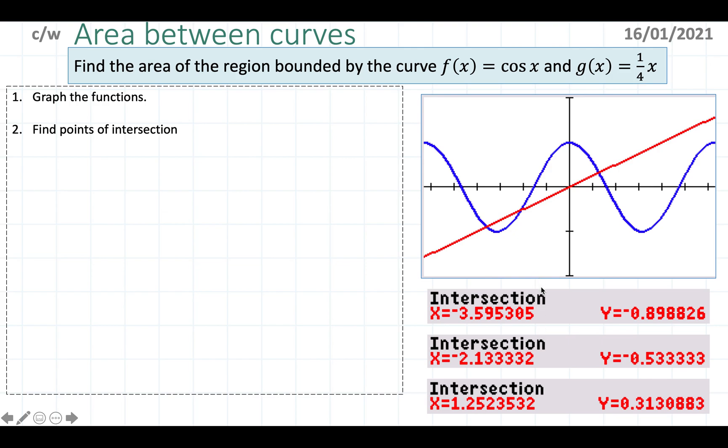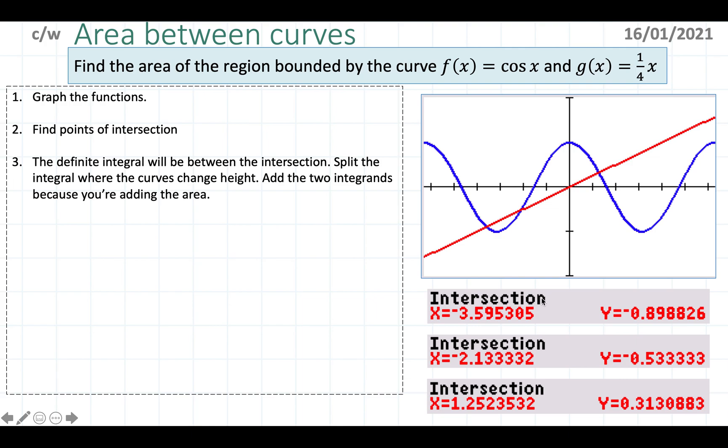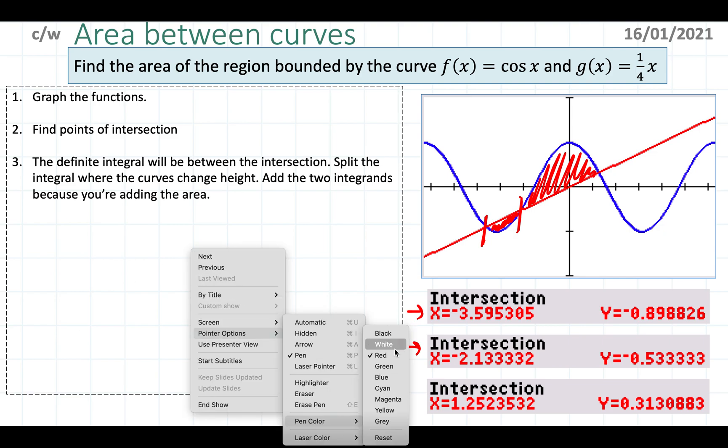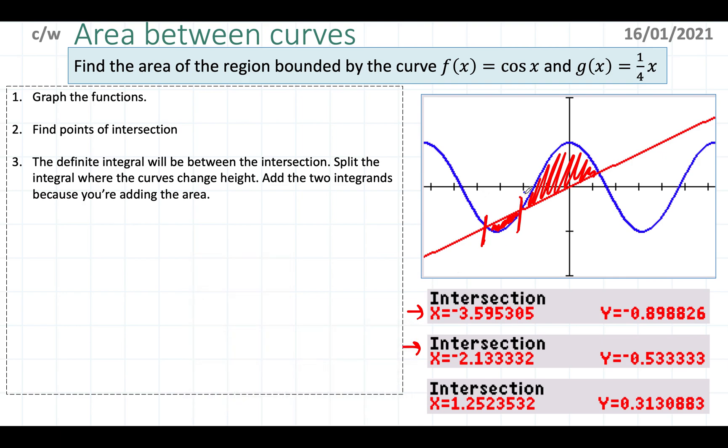Basically the area I need to find is between those intersections, so I need to split my integral to fit those intersections. The first area I need to find is this area and then the second one is here. The first area is going to be bound from here to here, which is the first two points of intersection, and then the next one is going to be bound from the second to the third points of intersection.